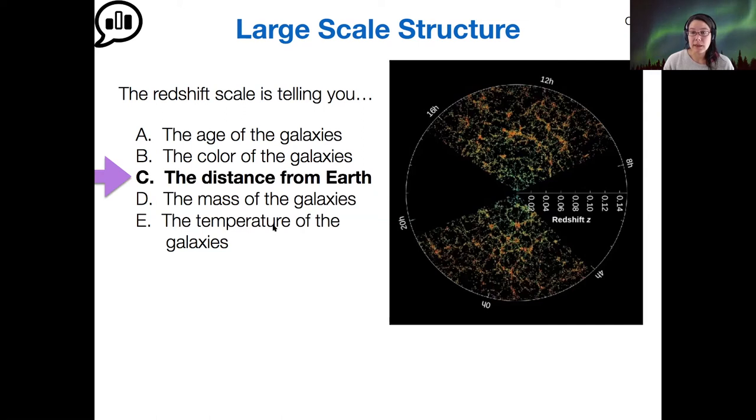I see a lot of C and also a lot of A. C was what I had in mind—the redshift does directly tell you the distance of these galaxies from our observing position here on Earth. A, you're kind of on the right track—it is also related to our lookback time, which can tell us about the age of the universe.